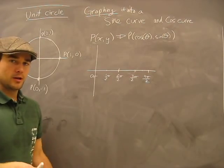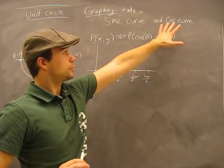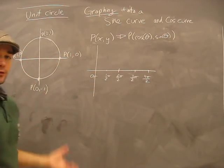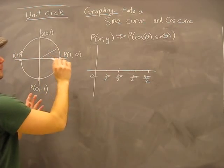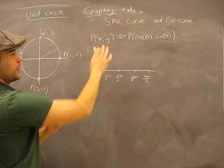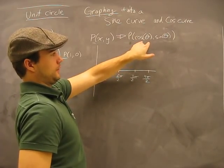So similarly, we're going to graph cosine based on the unit circle. The unit circle, as we showed before in the previous video, is really the point of cosine theta.